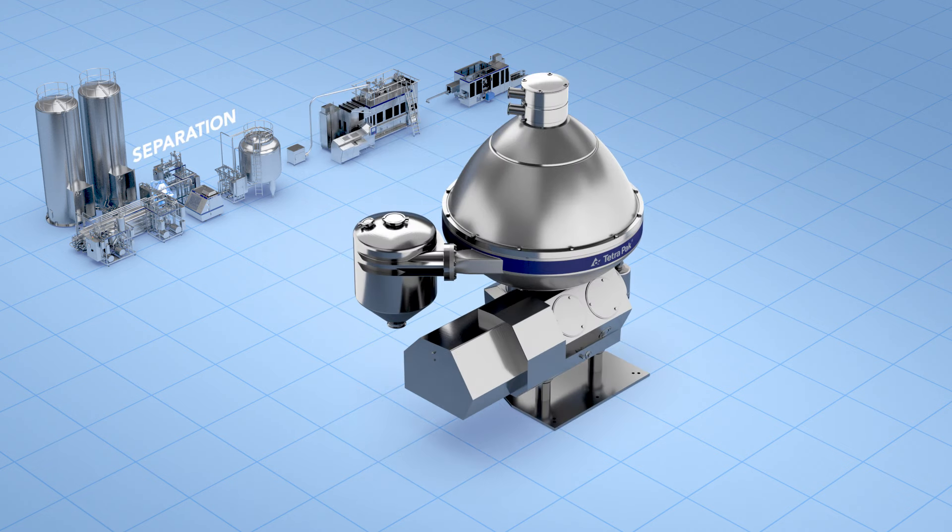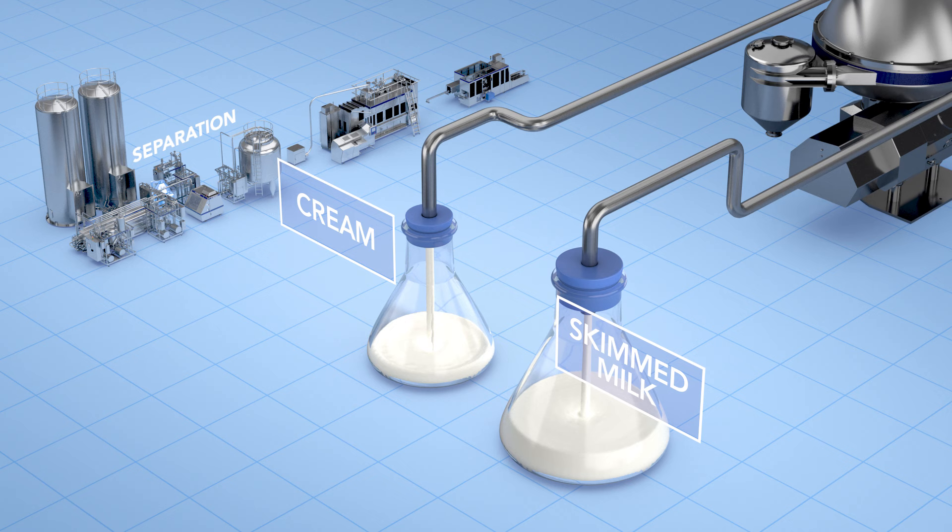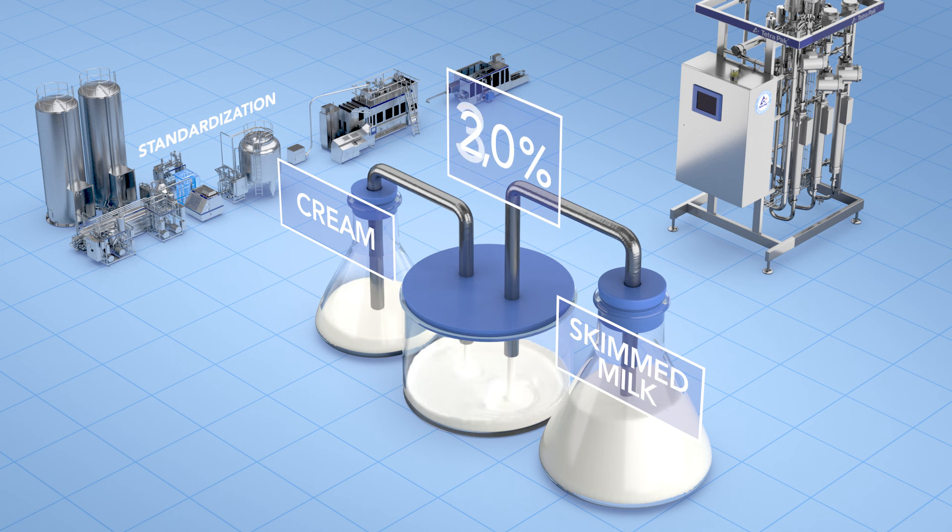Cow's milk varies in fat content, so it's first separated into cream and skimmed milk by a centrifugal separator. Some of the cream is then mixed straight back in to achieve, for example, 1, 2 or 3% fat. Because as a consumer, you choose either full-fat, semi-skimmed or skimmed milk.